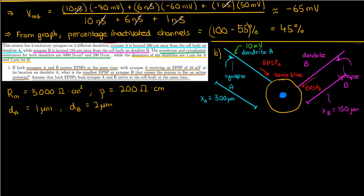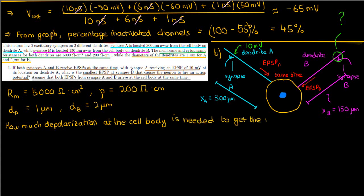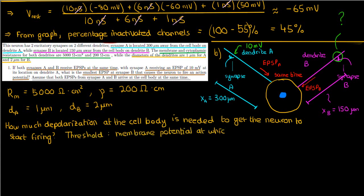The EPSPs from both synapses travel down their dendrites and arrive at the cell body at the same time. We need to find how much depolarization is required at the cell body to fire an action potential. The threshold is the depolarization level beyond which the neuron fires. The threshold occurs when the inward currents exceed the outward currents.